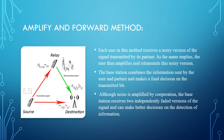The second method is amplify and forward — another simple cooperative signaling method. Each user receives a noisy version of the signal transmitted by its partner, then amplifies and retransmits this noisy version. The base station combines the information sent by both the user and the partner and makes a final decision on the transmitted bit. The noise may be amplified somewhat, but since the base station receives two independently faded versions of the signal, it can make a better decision on detecting the information.